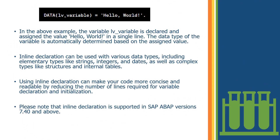Let's take another example: DATA lv_variable = 'Hello World'. The lv_variable is declared and assigned the value 'Hello World' in a single line. The data type of the variable is automatically determined based on the assigned value. By default, if it is a character it shows character type, if it is an integer it converts to integer type. Inline declaration can be used with various data types including elementary types like string, integers, dates, as well as complex data types like structures and internal tables.